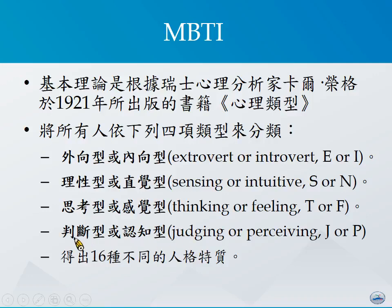第四个是判断型（J）跟认知型（P）的这两种。判断型的人比较在乎从自己的角度去判断他人或事物的优缺点；而认知型的人则比较在乎别人的感受，用P来代表。利用E、I、S、N、T、F、J、P这些不同的组合，我们可以找出16种不大一样的人格特质。